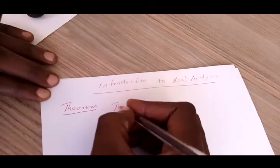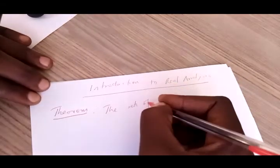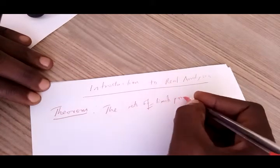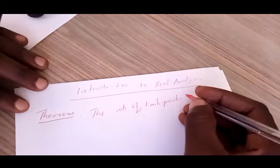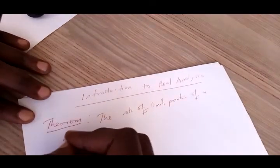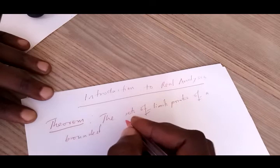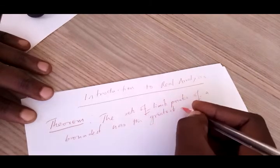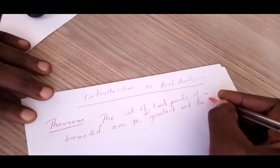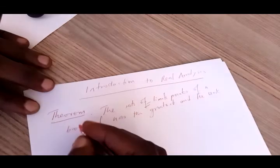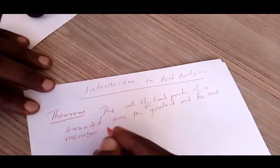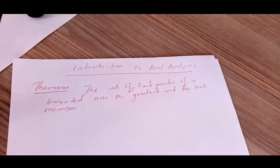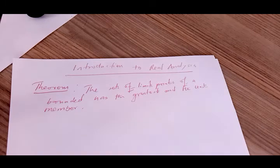This theorem states that the set of limit points of a bounded sequence has the greatest and the least member. In short, if we have a set consisting of limit points and that set is bounded, then it should have the greatest and the least member — meaning the biggest value and the smallest value.